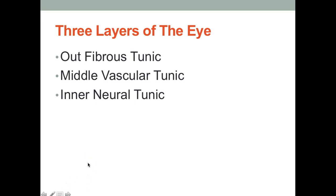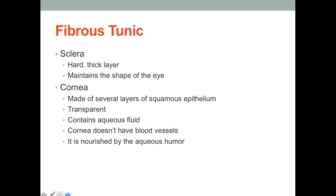Now we're going to talk about the layers of the eye, going through structures one layer at a time. There is the outer fibrous tunic, the middle vascular tunic, and the inner neural tunic. We'll start with the outer fibrous tunic. The two structures that make up the fibrous tunic are the sclera and the cornea.